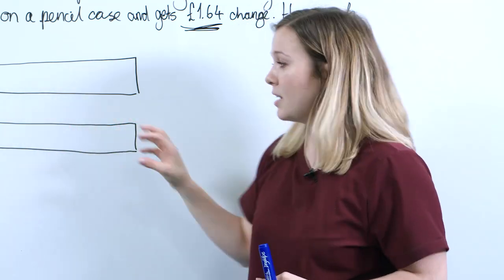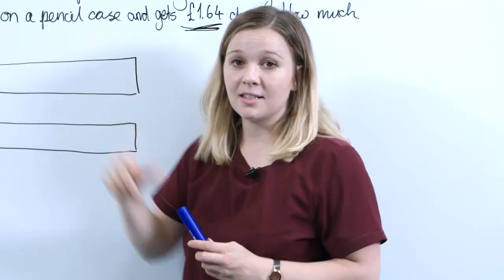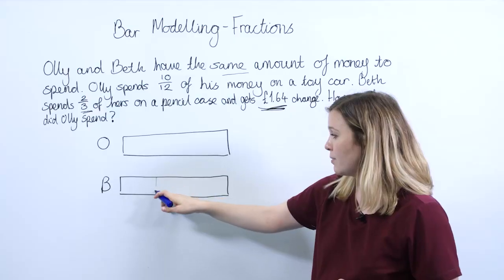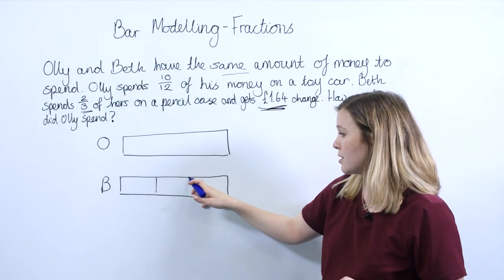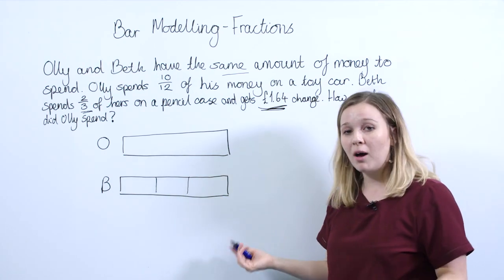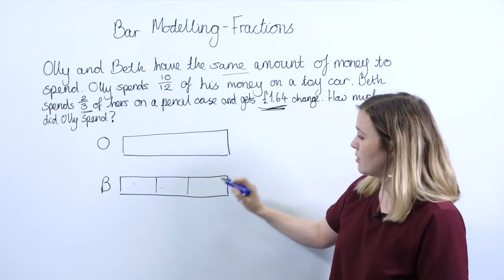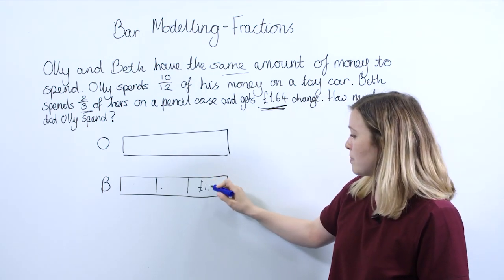Now what they want to do is split it into three equal parts to represent the three thirds. So if we divide that bar up into thirds, which part did she spend? She spent these two parts, so this part is her change, and we know from the question that this is £1.64.